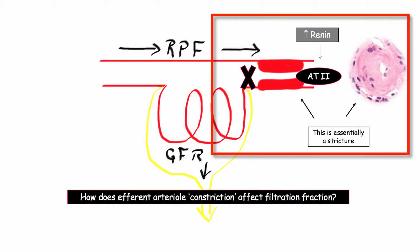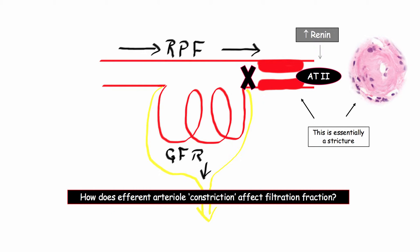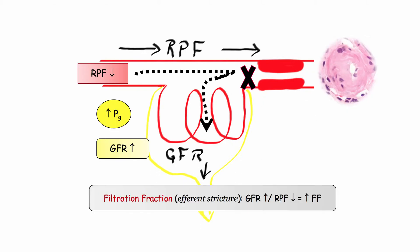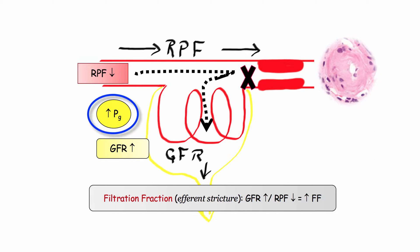What happens to the filtration fraction if you obstruct or constrict the efferent arteriole? This is a recurrent theme on Step 1. The two common examples are hyalinosis in a diabetic and angiotensin II release. A lesion of the efferent arteriole behaves essentially like a stricture: renal plasma flow decreases due to limited flow past this functional stricture. Consequently, intraglomerular pressure rises, resulting in an increased filtration fraction. Whereas this is useful in maintaining GFR, it is also the mechanism that results in hyperfiltration injury in diabetics and patients with reduced renal function.